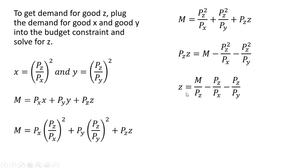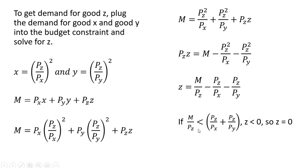Now it's possible that the demand for good z could be negative. In that case, the consumer would not buy any units of good z — you can't demand minus two goods, for example. So if the condition holds that z would be less than zero, we simply set z equal to zero.